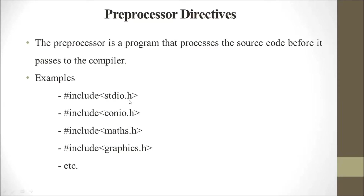The header file is divided into two parts: the hash include is the directive, and stdio.h is the preprocessor. Together they form the complete name 'preprocessor directive'. Different examples include conio.h, which is the console input/output header file containing standard input/output functions.